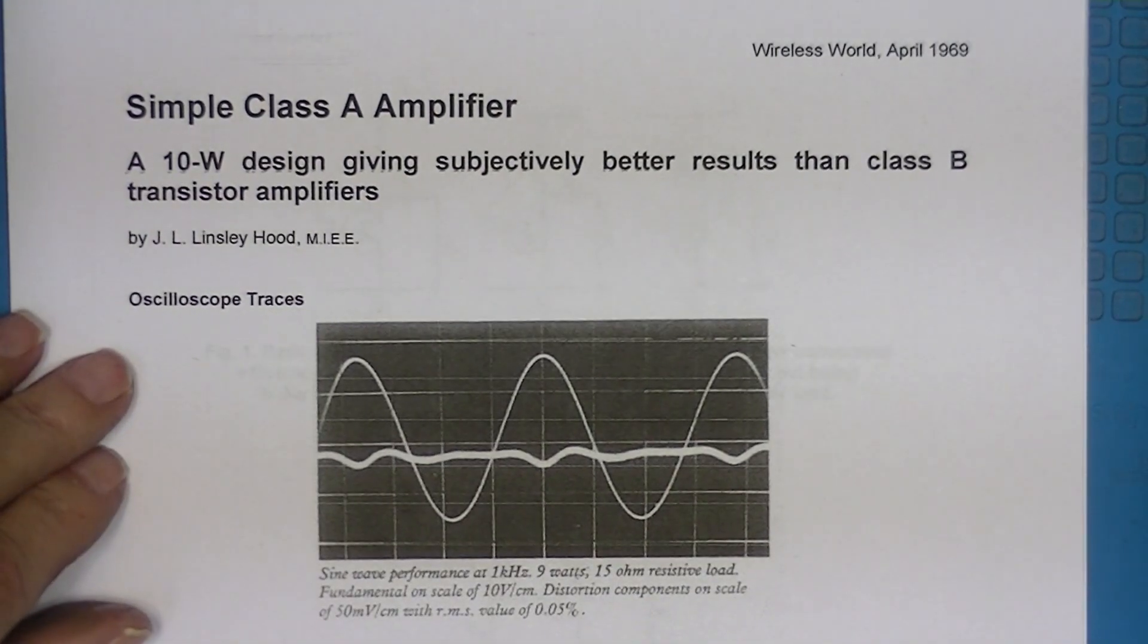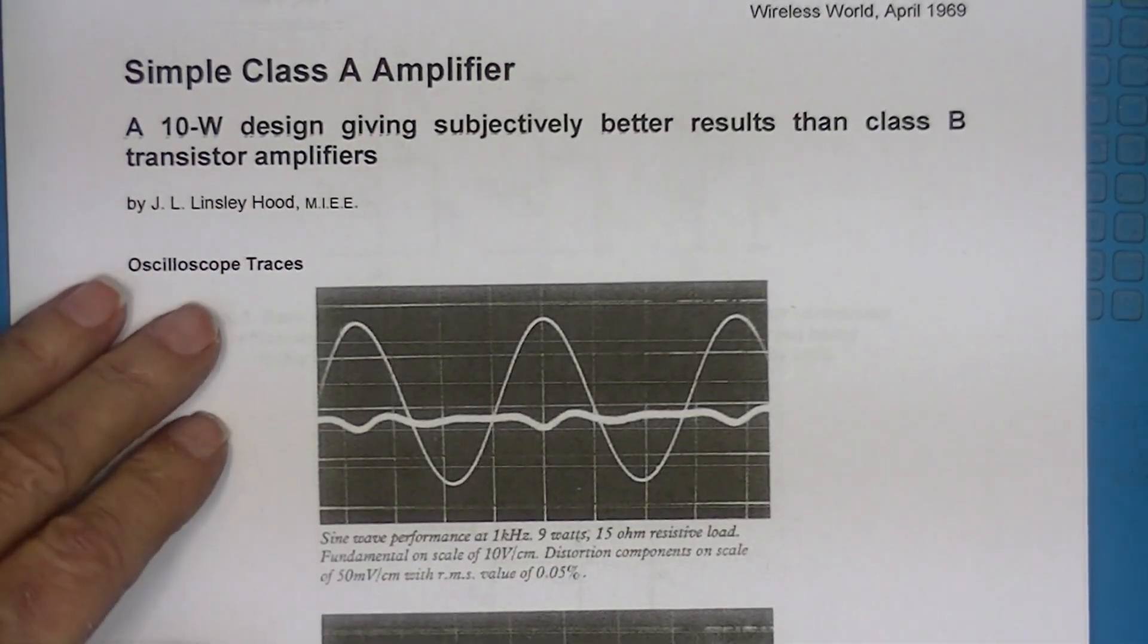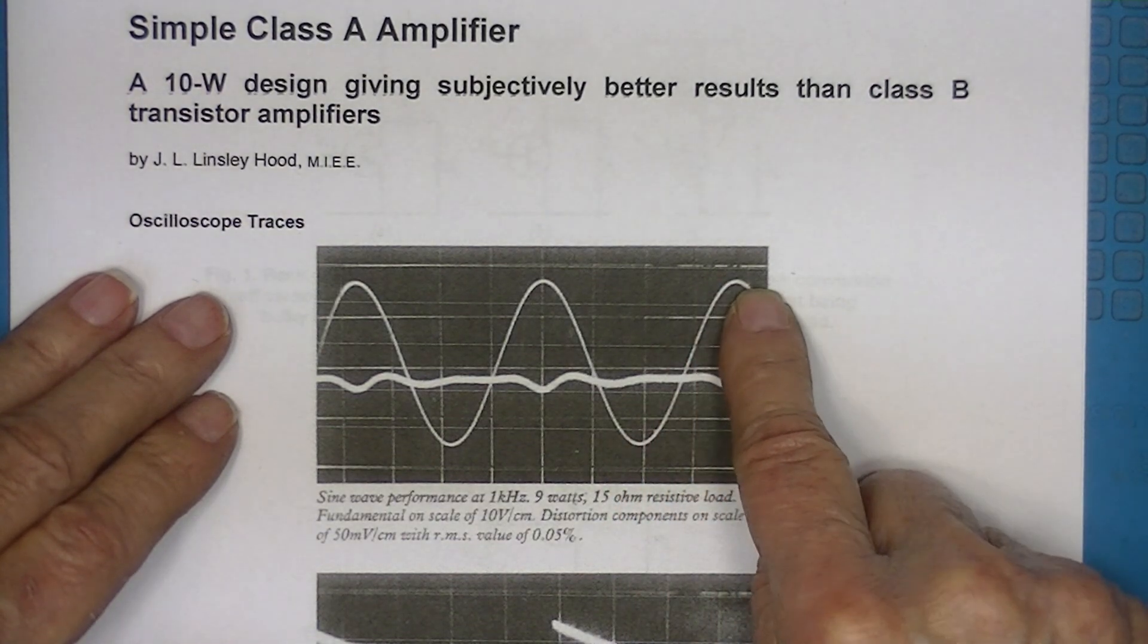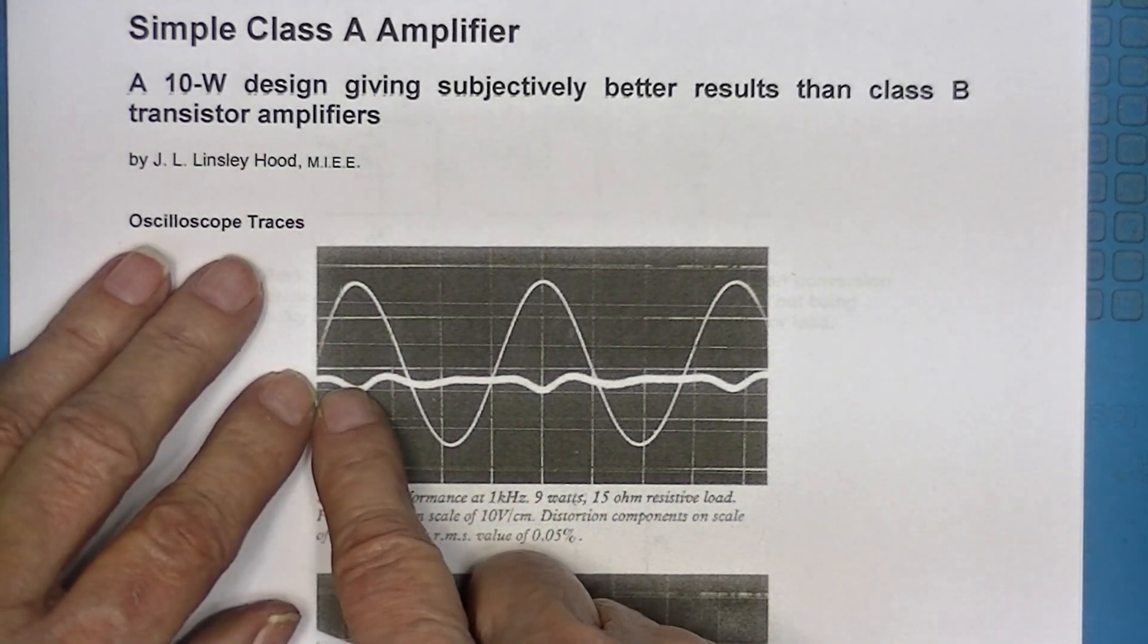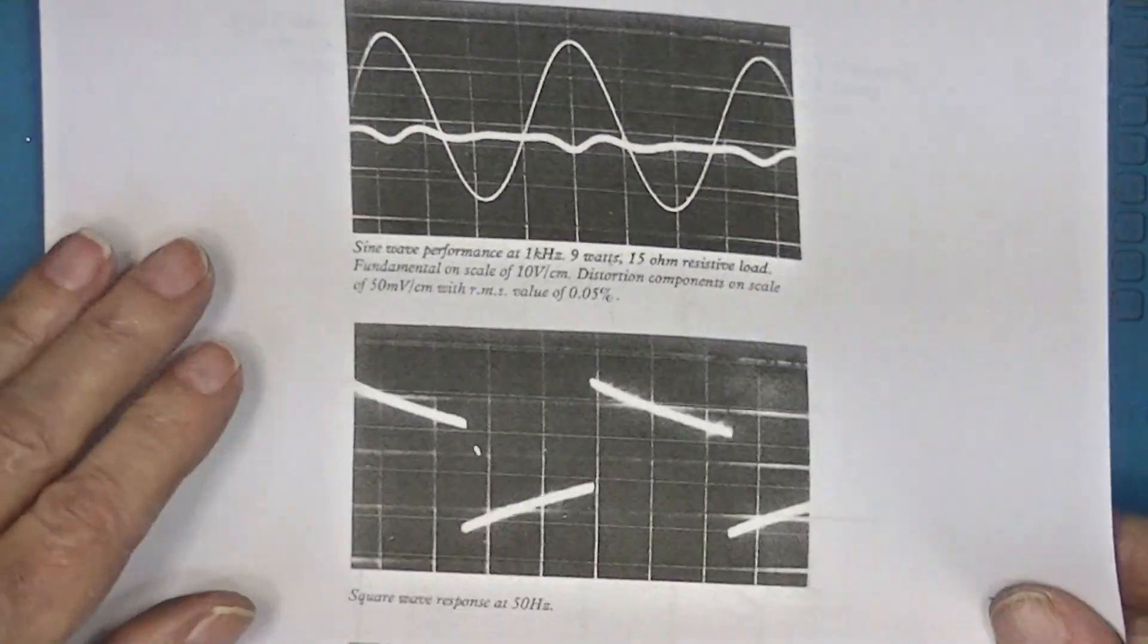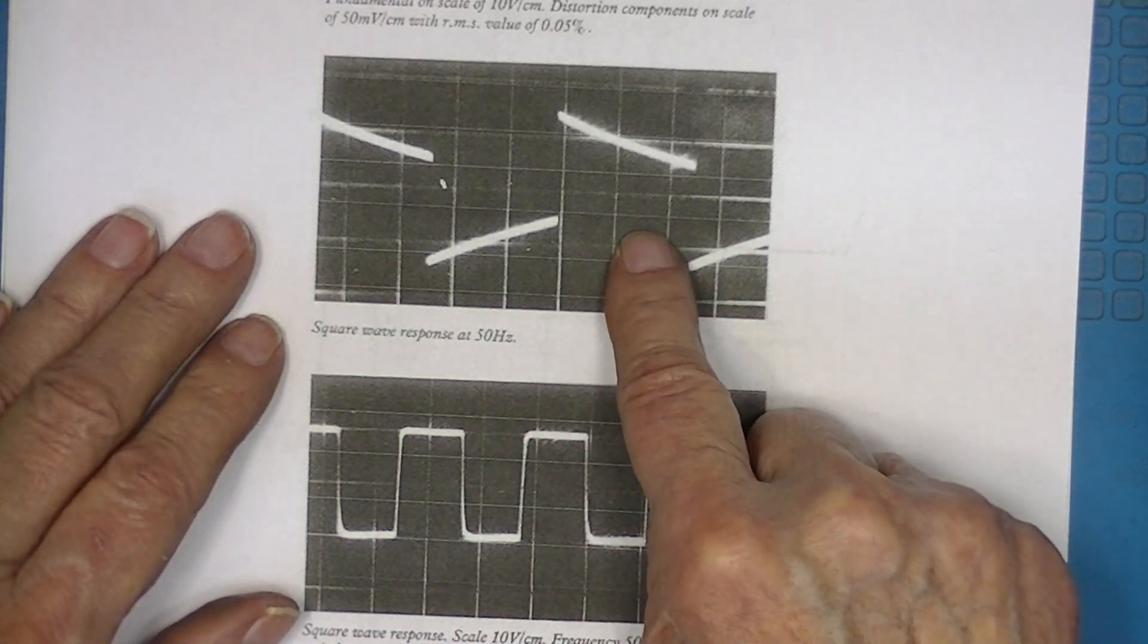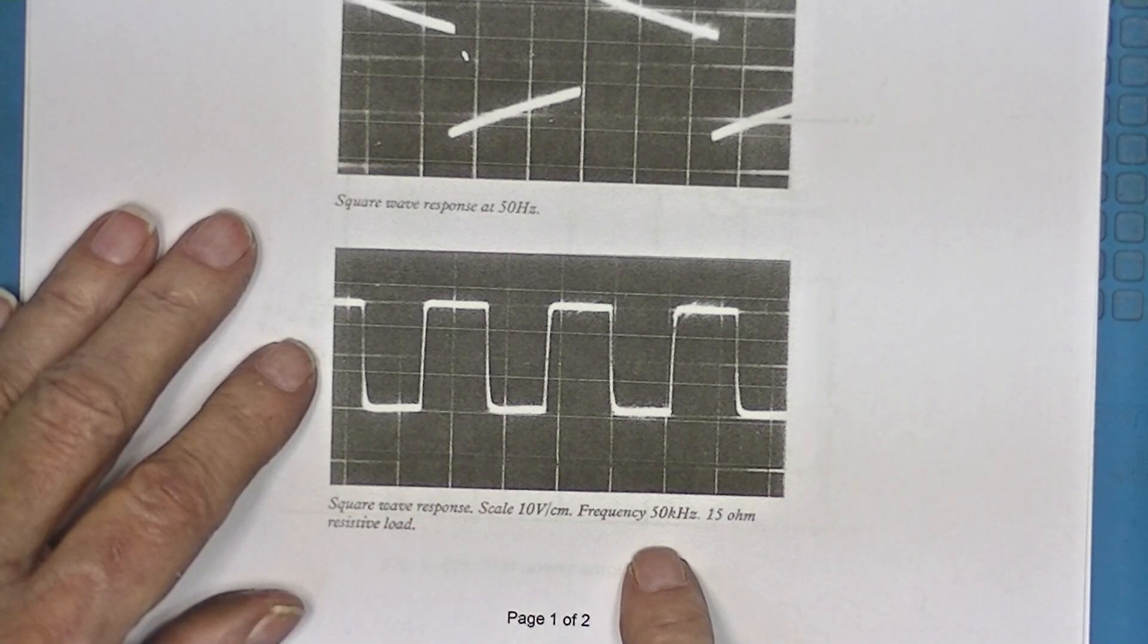In this same article, April '69 Wireless World, he has some oscilloscope views. First, this is a sine wave or a very good sine wave measured across a 15 ohm load. Here are the distortion components. The other two views are with an input square wave at 50 hertz and an input square wave at 50 kilohertz.